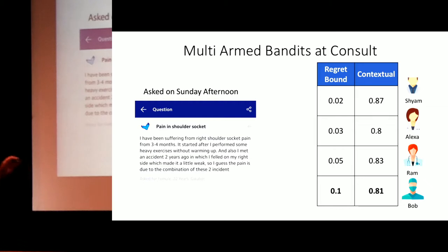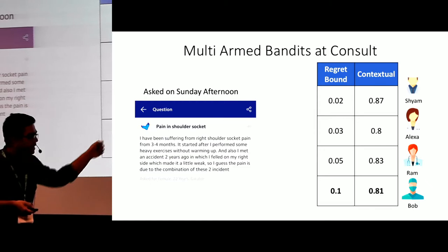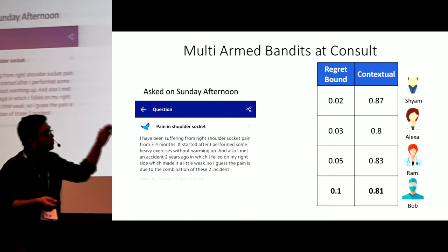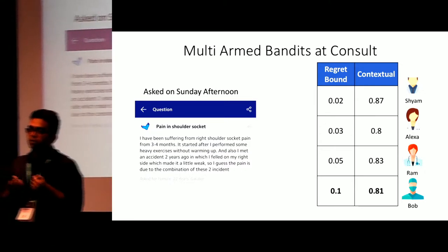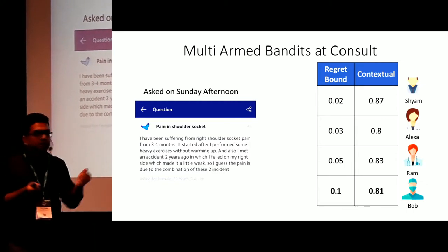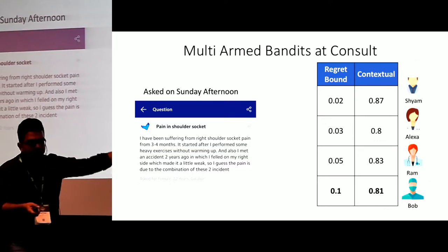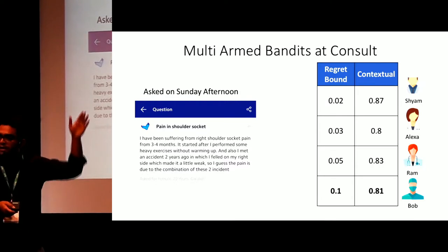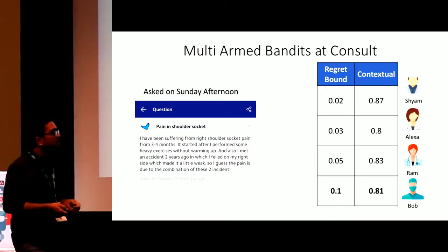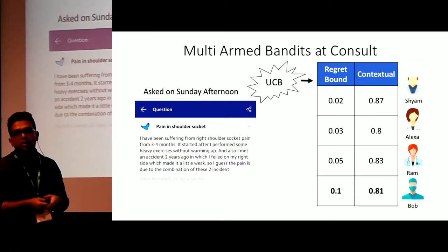So how do we give Bob more chances? If we get a new question on a Sunday afternoon and calculate the contextual predicted rewards, we also calculate what we call a regret bound. A regret bound shows how little information you have about a doctor — the less information, the higher the regret bound. Since Bob has very few assignments, we don't know much about him, so his regret bound is higher. We add this regret bound to the contextual predicted rewards, sum them up, and pick the best. That way, Bob gets a chance to answer.